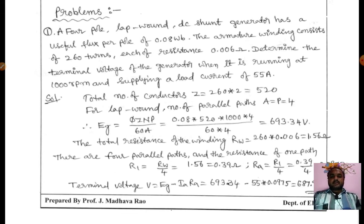The solution is: you have to find out the terminal voltage of DC generator. Terminal voltage V = Eg - IaRa. We have to find Eg, Ia, and Ra. Before finding Eg, we should know the number of turns. The formula is Eg = φZNP/60A. Here useful flux per pole is 0.08, Z is 260 × 2 = 520, N is 1000, number of poles is 4, and number of parallel paths for lap wound A = P = 4.